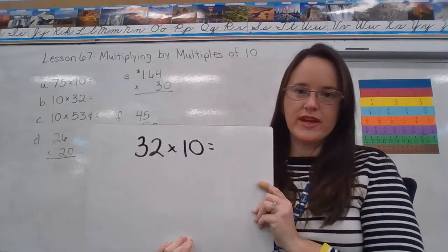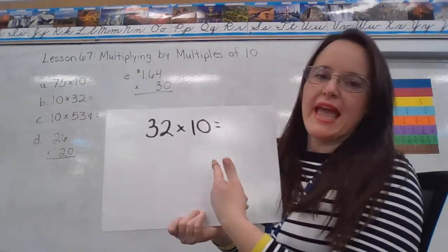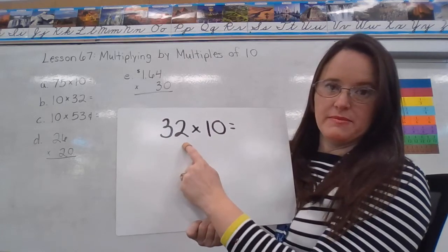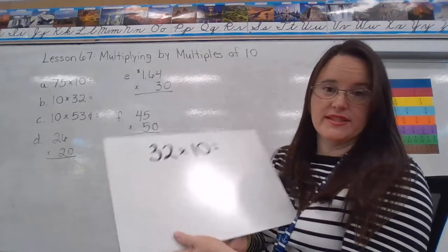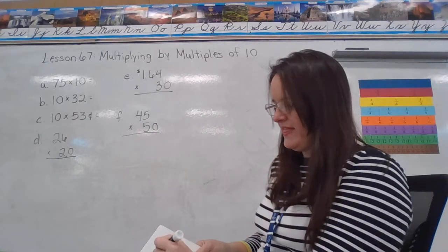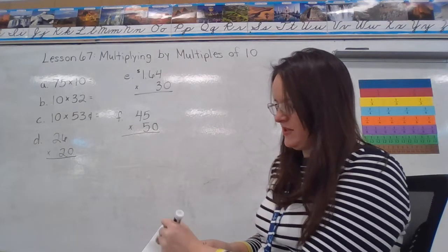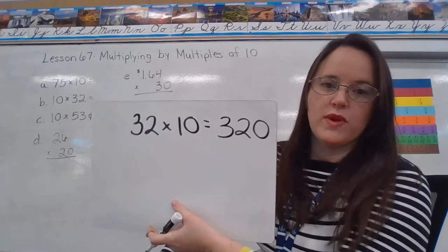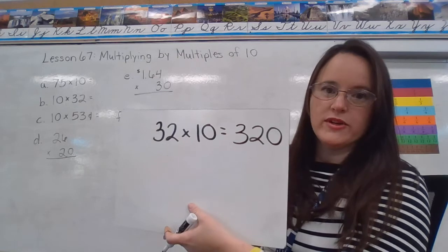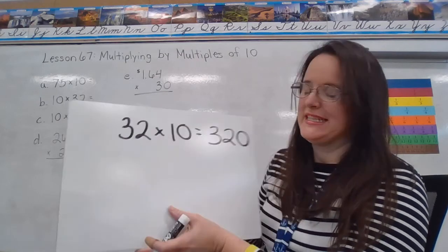I have shown you this trick before. Anything times 10 is going to be this number with a 0 tacked on to the end of it. So we've talked about this, we've done some things with this trick. For example, this answer would be 320. What I haven't really showed you yet is why that works, and that's what we're going to talk about today.